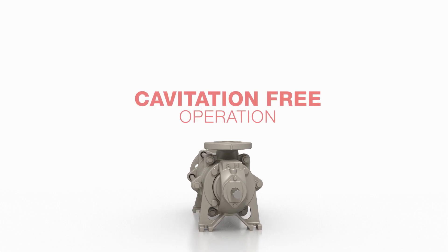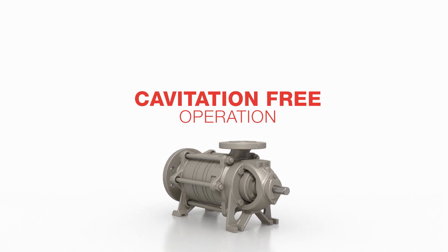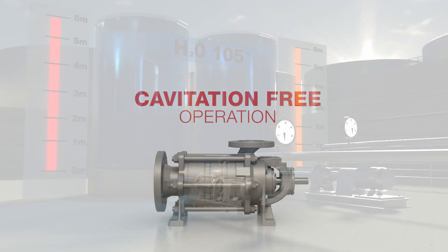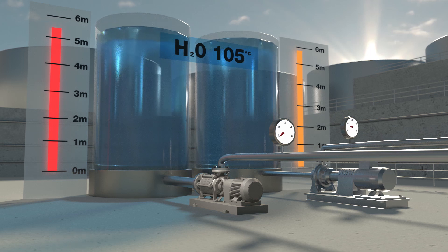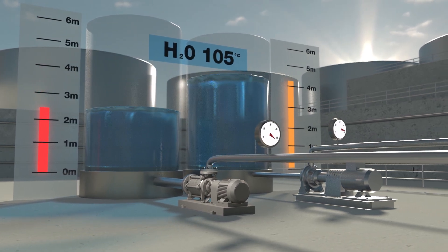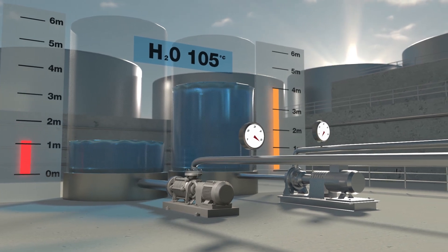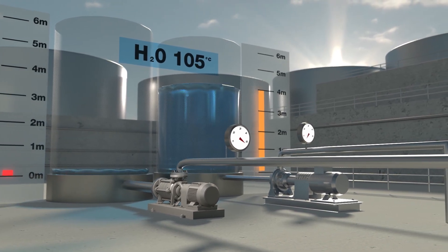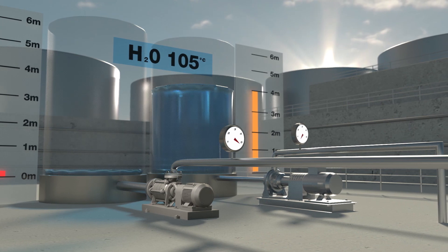Third, they provide cavitation-free operation. The design of SeeHe side channel pumps enables them to operate without cavitation at NPSH values as low as 0.18 metres or 0.6 feet. Many centrifugal pumps require NPSH values of more than 4 metres or 13 feet.